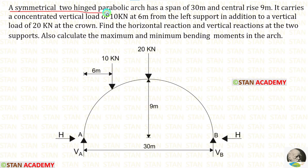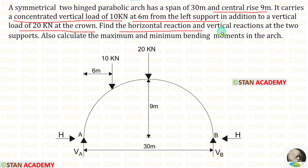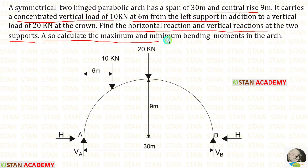A symmetrical two-hinged parabolic arch has a span of 30 meters and a central rise of 9 meters. It carries a concentrated vertical load of 10 kilo Newton at 6 meters from the left support, in addition to a vertical load of 20 kilo Newton at the crown. Find the horizontal reaction and vertical reactions at the two supports, and also calculate the maximum and minimum bending moments in the arch.